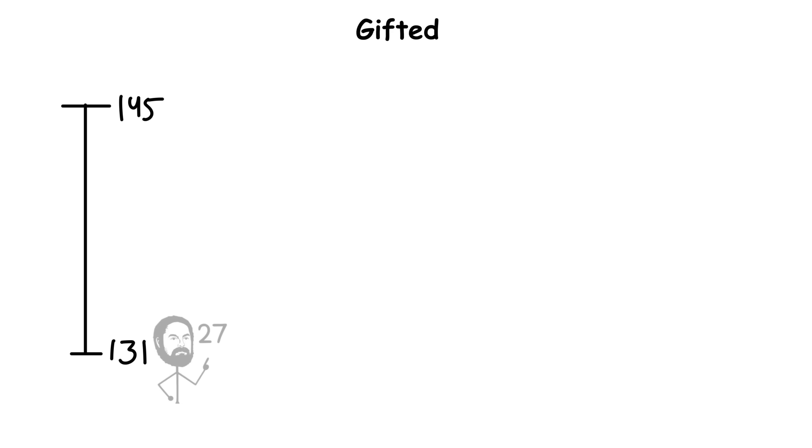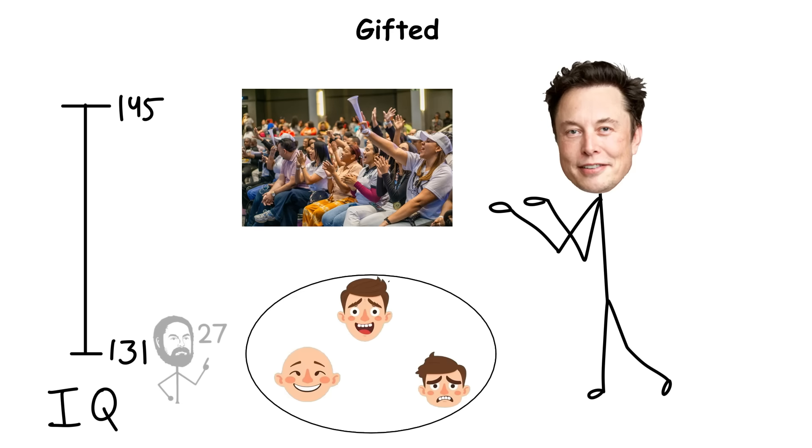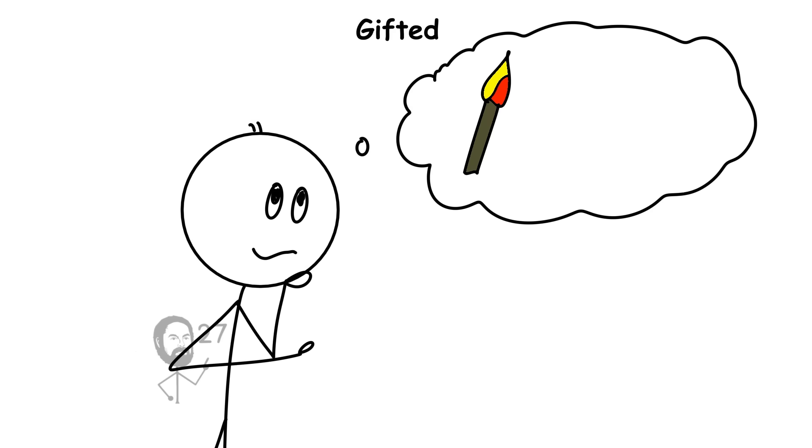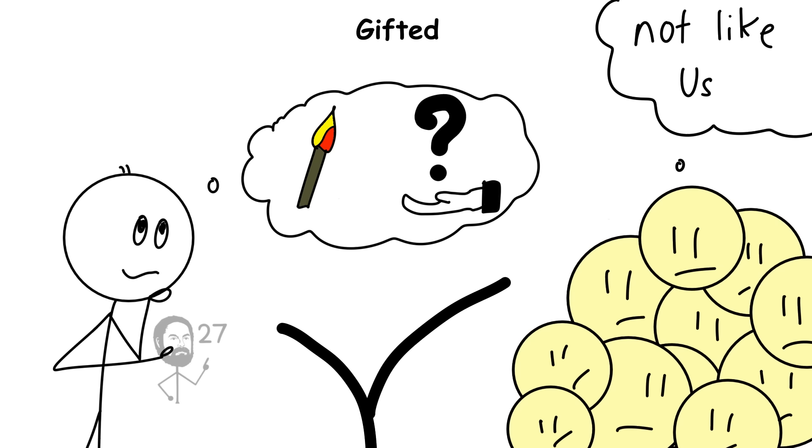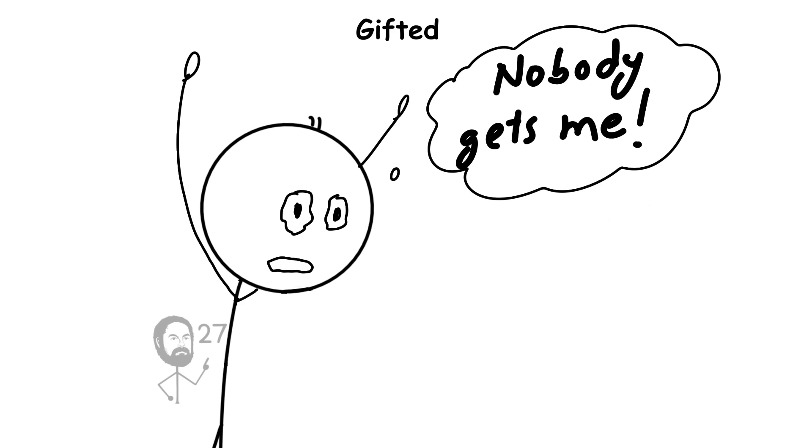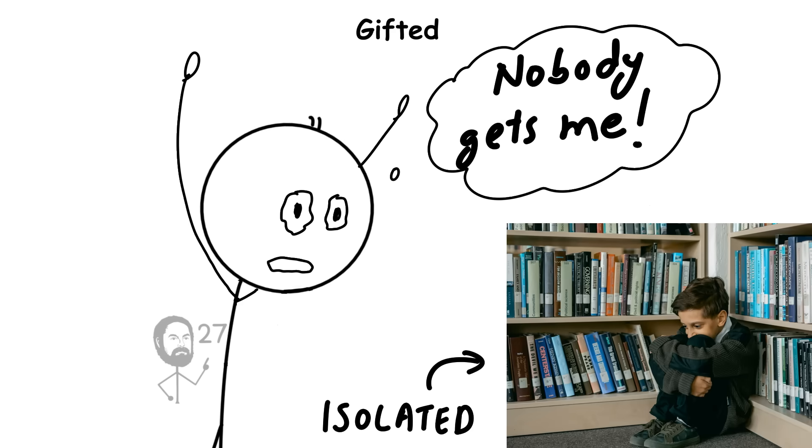However, this level of intelligence also introduces unique social and emotional dynamics. Because their interests and reasoning often diverge from the norm, they may struggle with feeling misunderstood or isolated, especially during childhood.